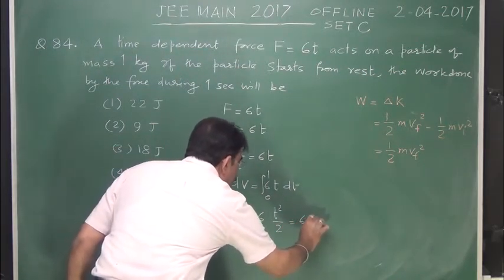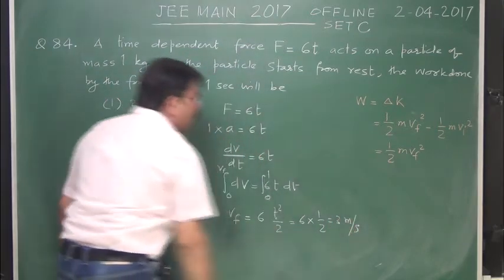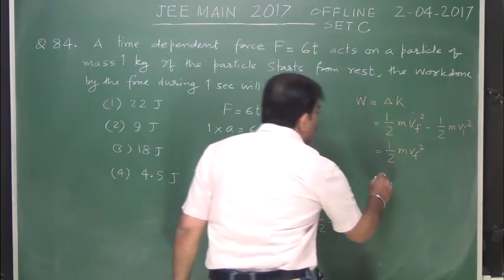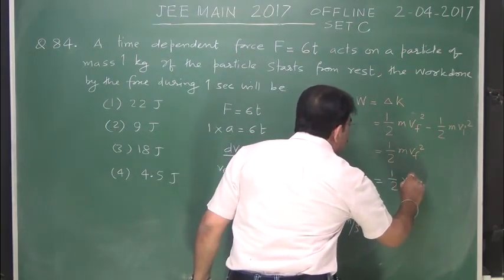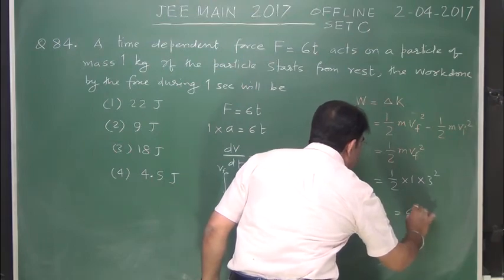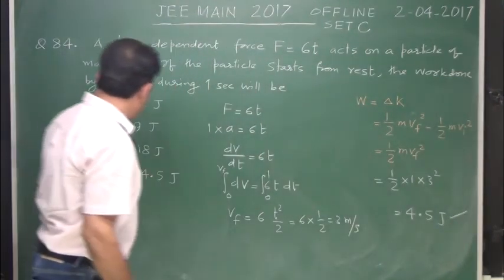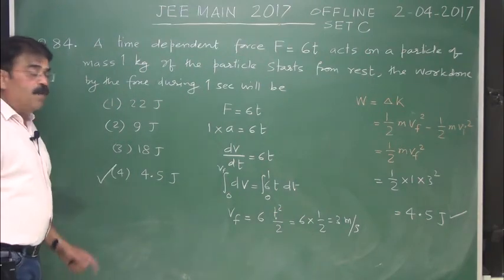So 6 into yahaan 1 by 2 yahaan hai, 3 meter per second yahaan gai, final velocity. Yahaan put karna hai, bas half, mass is 1 kg, final velocity square minus, 3 square, 9 by 2 that is 4.5 joule. Option 4 is the correct one.